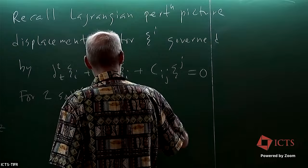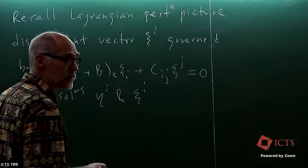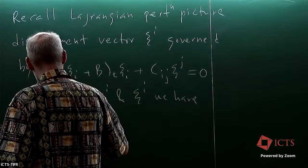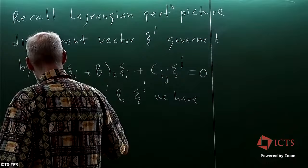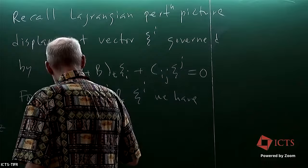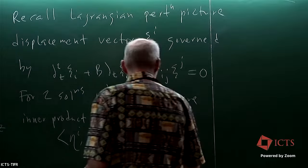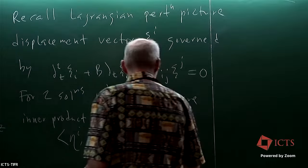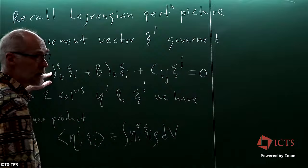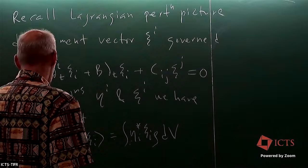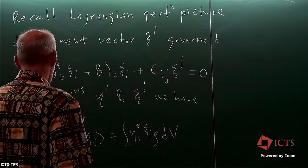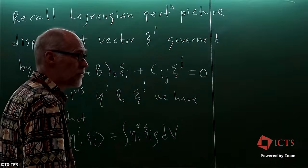Then we invented η and ψ as two solutions to this equation. We invented the inner product — so we had ⟨η, ξ⟩ as the integral over ηᵢ* ξᵢ times density dV. That density sitting there is a convention. Then we showed that if these were modes they were orthogonal, and then we built that sum to get the tides.